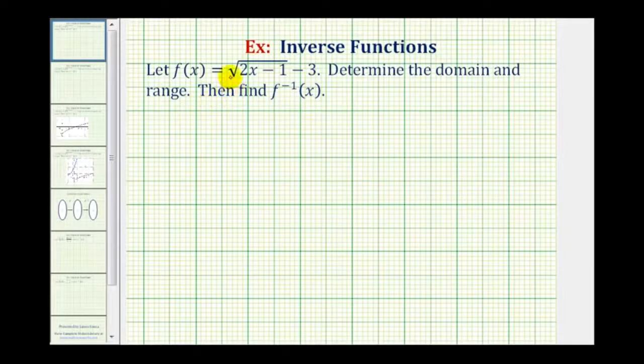We're given f of x equals the square root of the quantity two x minus one, minus three. We want to determine the domain and range of the given function and then find the inverse function.